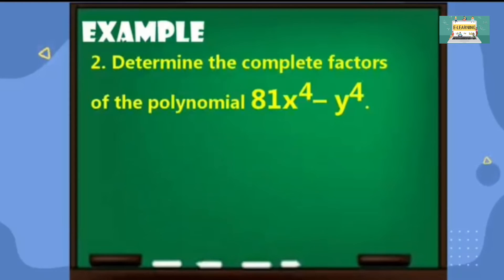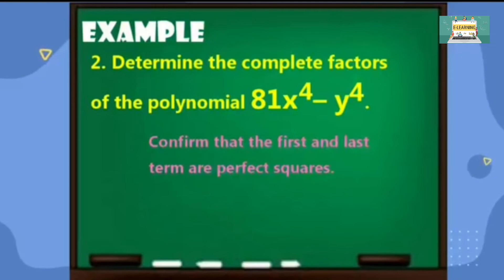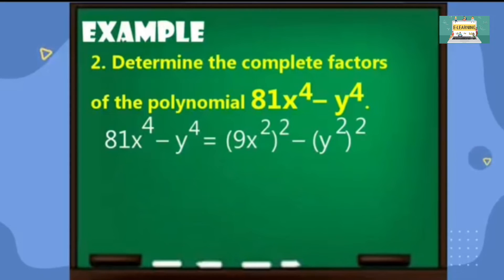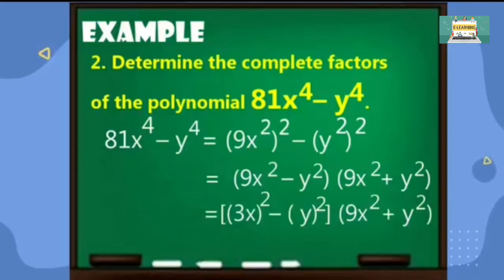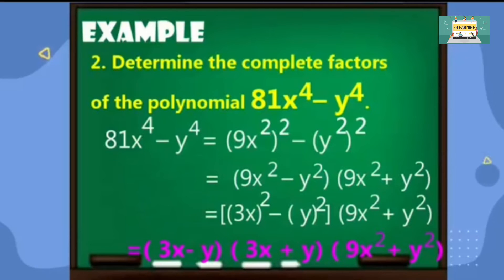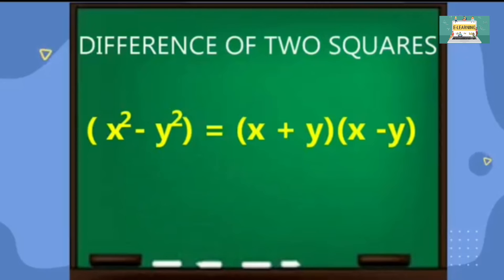For the second example, determine the complete factors of the polynomial. Confirm that the first and the last term are perfect squares: 81x to the fourth minus y to the fourth. Factor 81x to the fourth as 9x squared times 9x squared. To factor negative y to the fourth, one must be positive y squared and the other negative y squared. Notice that we can factor 9x squared minus y squared because it is also a difference of two squares. Then we will have another factor: 3x minus y and 3x plus y, and copy the other factor which is 9x squared plus y squared. To factor difference of two squares, remember the pattern: x squared minus y squared equals the quantity x plus y times the quantity x minus y.